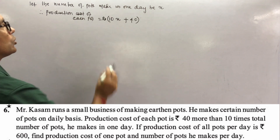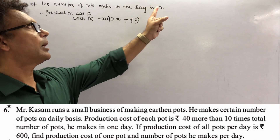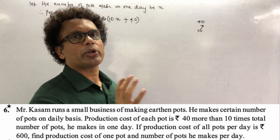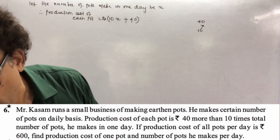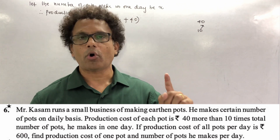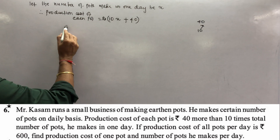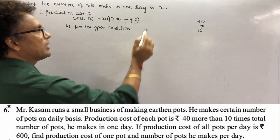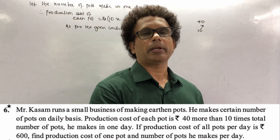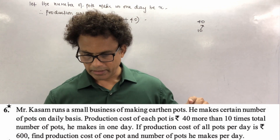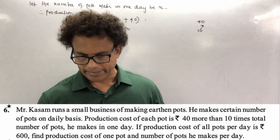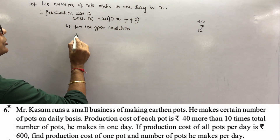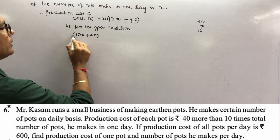The production cost of one pot is (10x + 40) rupees. If I make 40 pots and one pot costs 10 rupees, my total production cost is 10 × 40. Similarly here, total production cost is (10x + 40) × x. As per the given condition, the production cost of all pots per day is 600 rupees, so we write: (10x + 40) × x = 600.